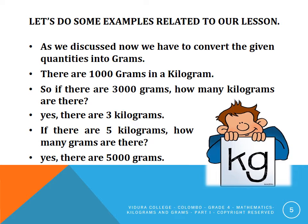Let's do some examples. We have to convert the given quantities into grams. There are one thousand grams in a kilogram. So if there are three thousand grams, how many kilograms are there? Yes, there are three kilograms. If there are five kilograms, how many grams are there? Yes, there are five thousand grams.